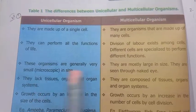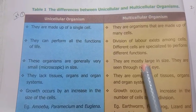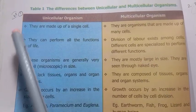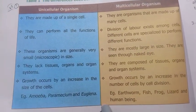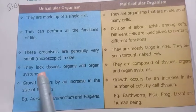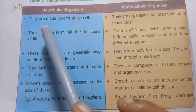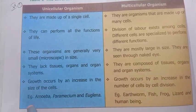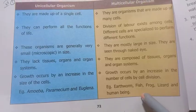So there are five points for unicellular and multicellular organisms. If two marks are asked, write three points; if five marks, write all points with examples.